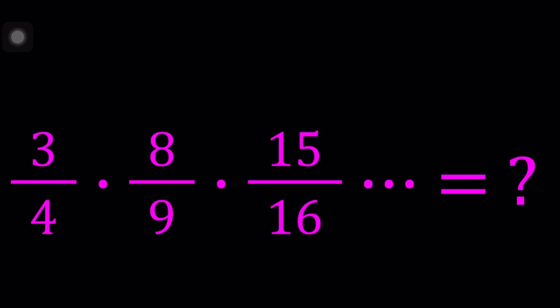So we have 4, 9, 16 — which is 2 squared, 3 squared, 4 squared — at the bottom, and on top we have one less than that. For example, 3 over 4: 3 is one less than 4. 15 over 16: 15 is one less than 16. I hope that makes sense. Now we're going to evaluate this infinite product. It's not a sum, it's a product.